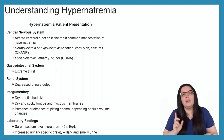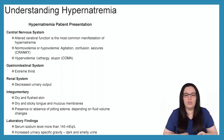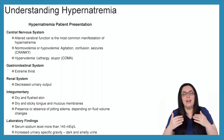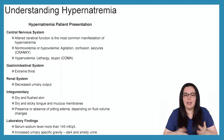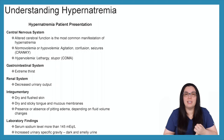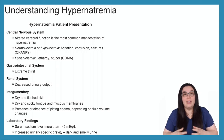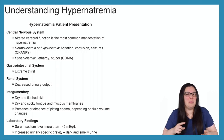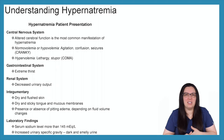Lastly, when it comes to laboratory findings, you're going to have a serum sodium level greater than 145 milliequivalents per liter, and an increase in urinary specific gravity because the kidneys aren't working appropriately. So when the patient does urinate, it's going to be dark and concentrated.